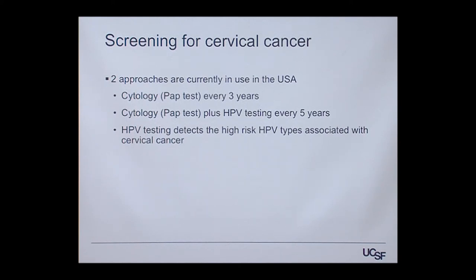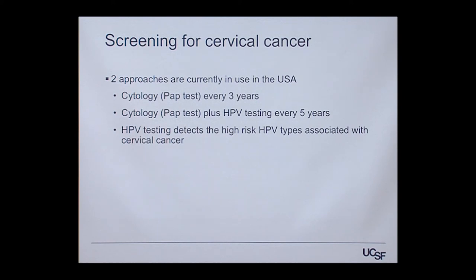We have two screening modalities in the U.S. One is the PAP test, also known as cytology, with current guidelines recommending screening every three years. The other is a PAP test combined with HPV testing — the co-test — which looks for high-risk HPV types. If negative on both tests, the patient has high security that she's safe and doesn't need another screening for five years, allowing an extended screening interval.